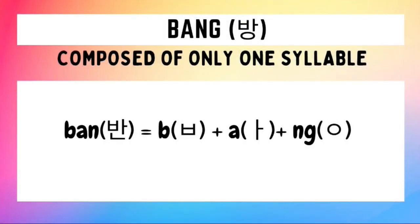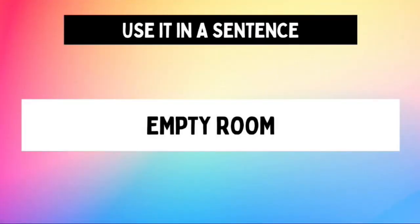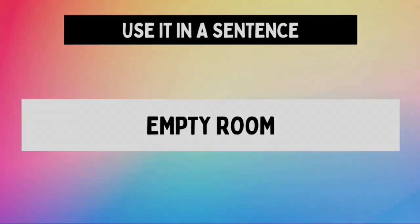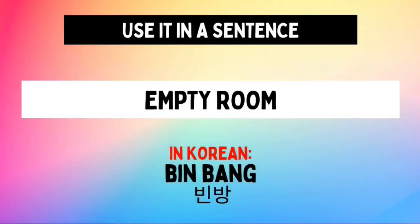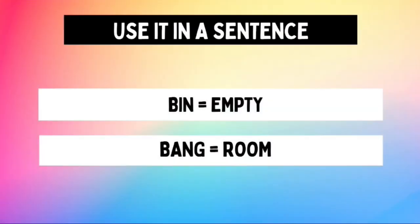How do we spell Bang in Hangul? This is composed of just one syllable, written by drawing first a B character, followed by an A character, followed by an Eon character. We combine these Hangul characters to form the Hangul of the word Bang. Now let's look at the example phrase: 'empty room.' The Korean translation is Pinbang. The first part, Bin, means 'empty,' and the second part, Bang, means 'room.' Combining them: Pinbang means 'empty room.' And with that, you've just learned Bang.